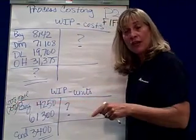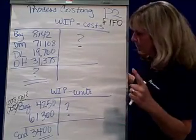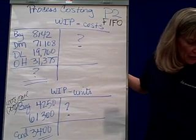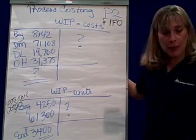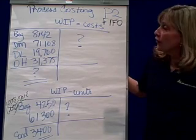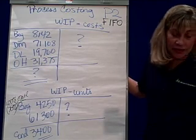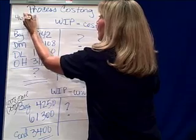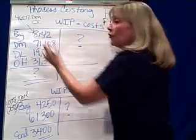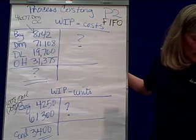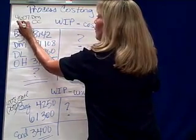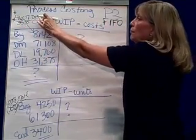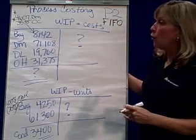Conversion costs, or CC, is labor plus overhead — they happen the same way. The direct materials cost associated with this beginning inventory is $4,607, and the conversion cost — labor plus overhead — is $3,535. So if I added the cost assigned to beginning inventory, materials plus conversion, I'll get $8,142.